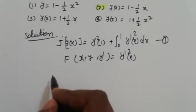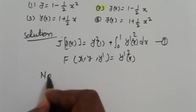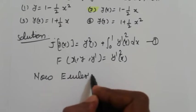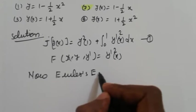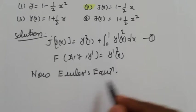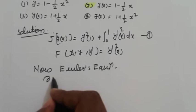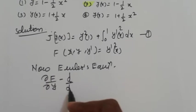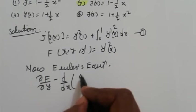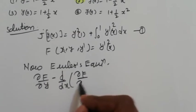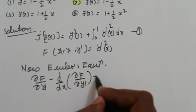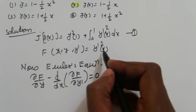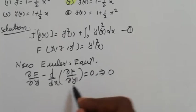Now Euler's equation: ∂F/∂y - d/dx(∂F/∂y') = 0. Now imply that ∂F/∂y, here y is not present, so we get here 0, write down d/dx.